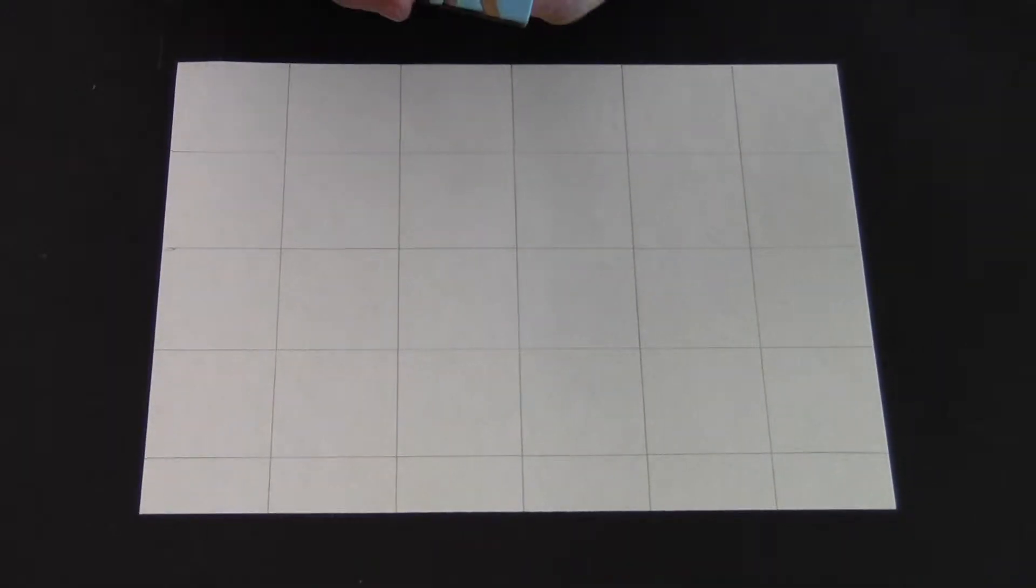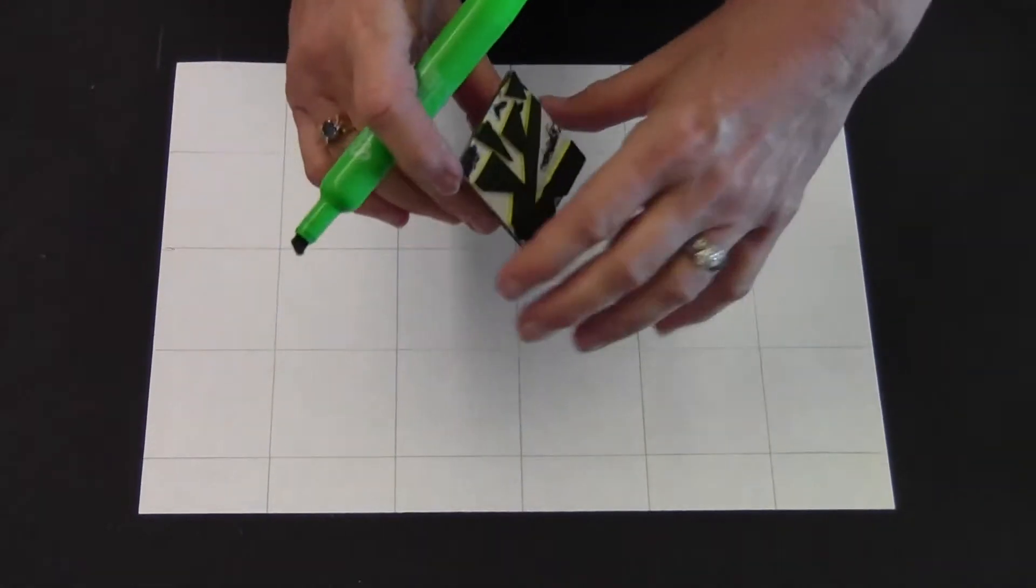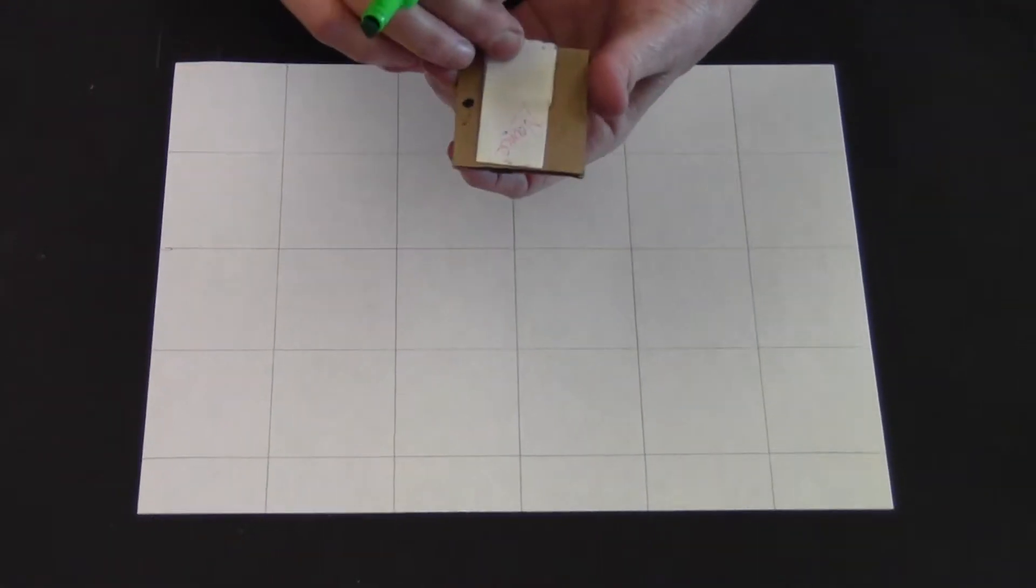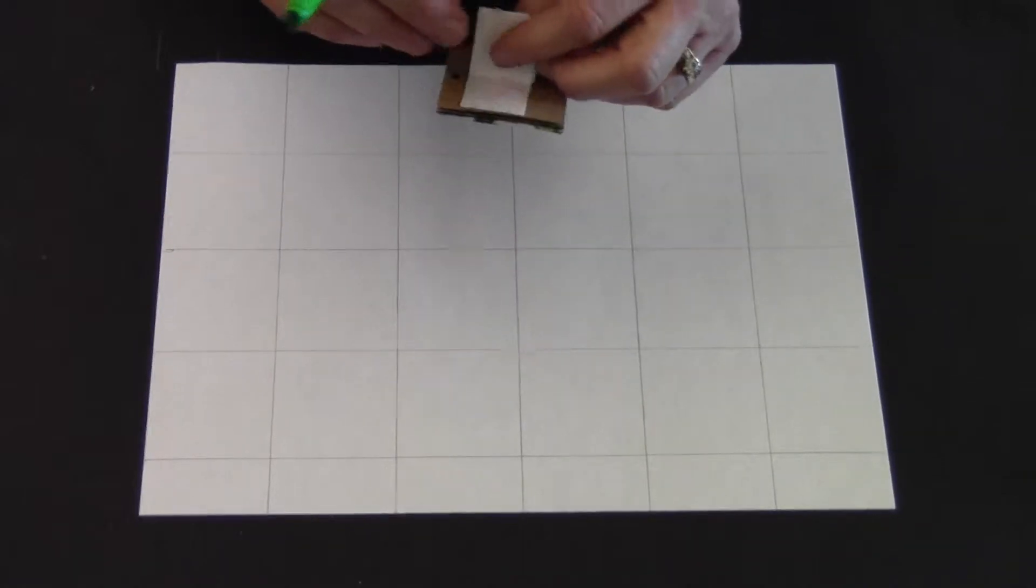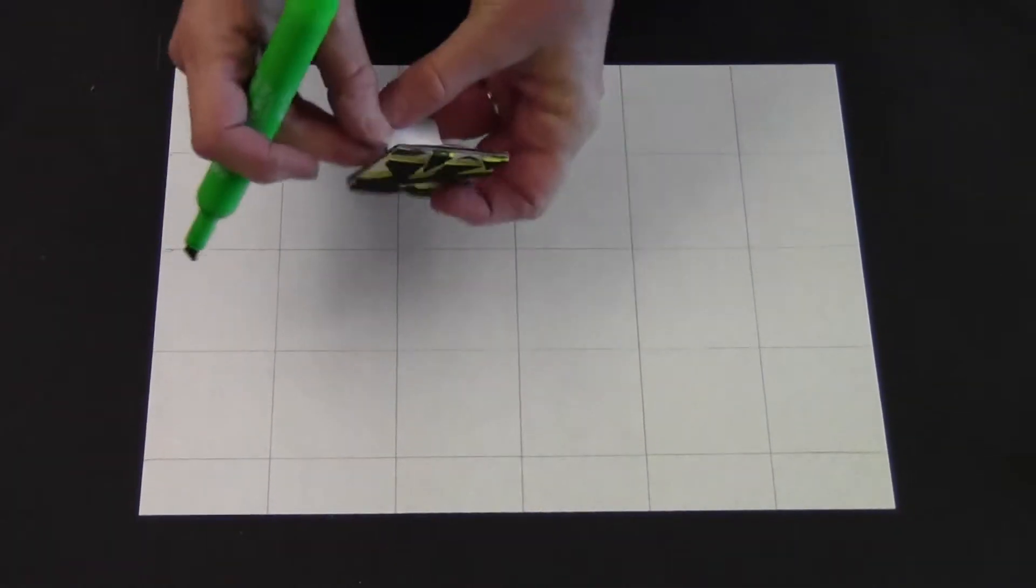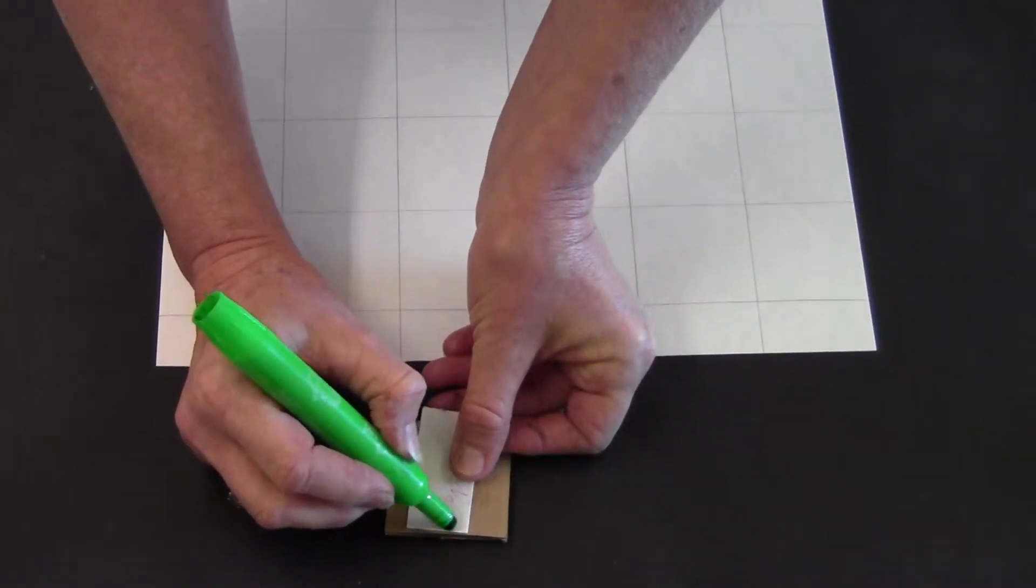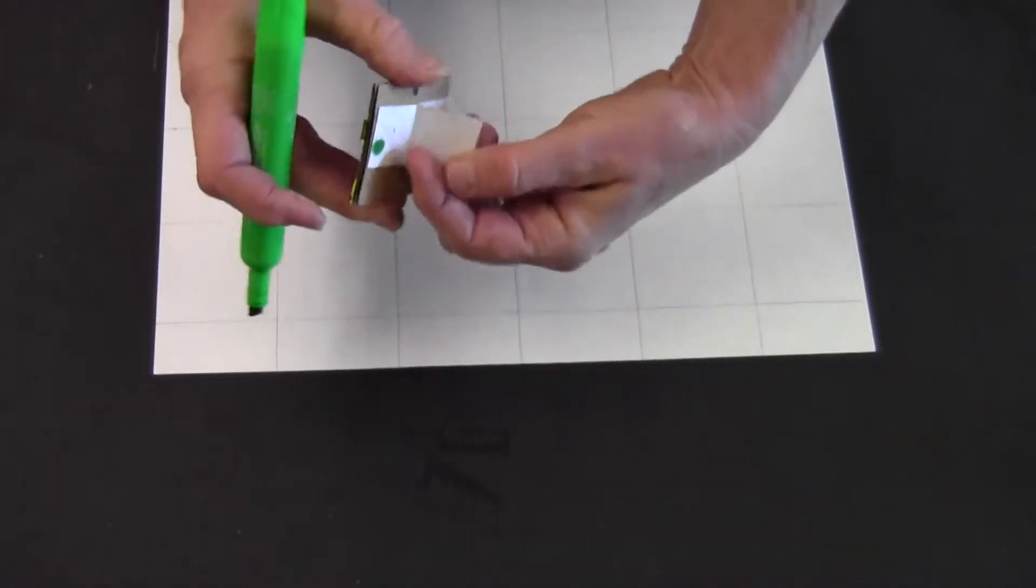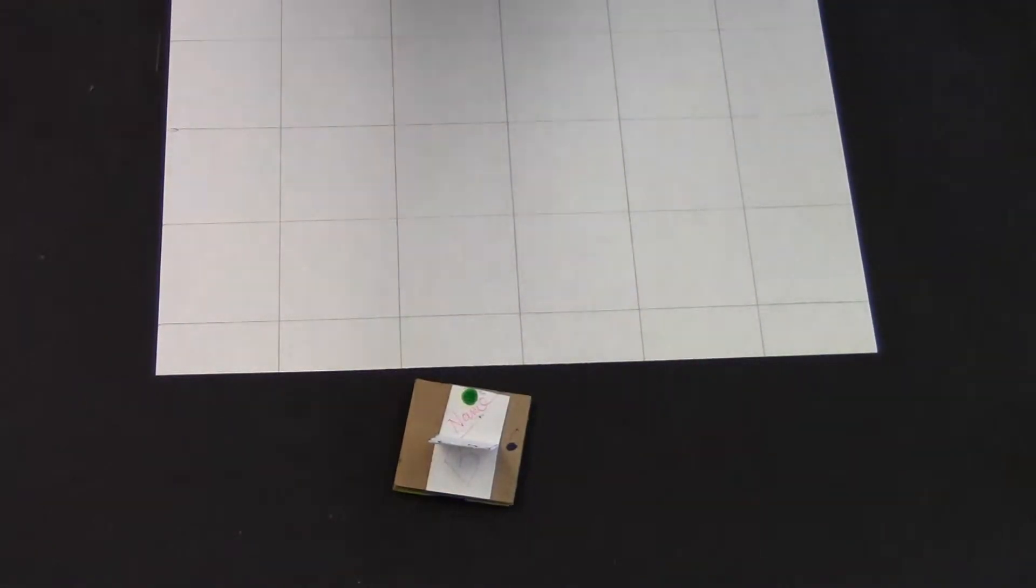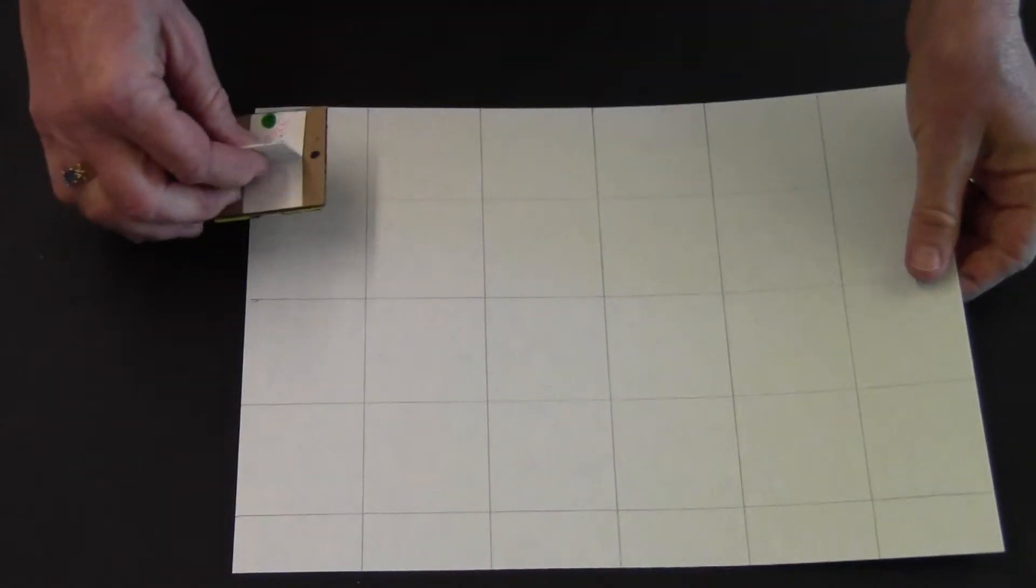All right, what we're going to do now is talk about the different ways that you can print. The first one we'll talk about is called a rotational turn. To do this, I think I'm going to use this printer. We first need to establish a top and a bottom. This is my print, and I am just going to establish this is the top. So with my green marker, I'm going to put a big green circle there so I know where the top is.